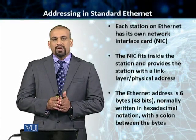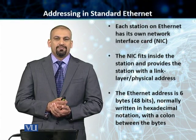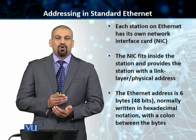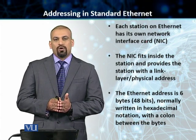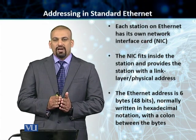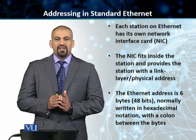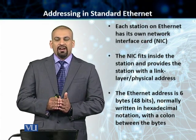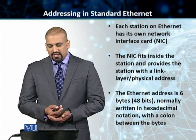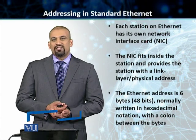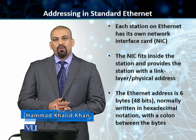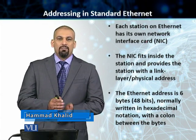We'll start talking about addressing in standard Ethernet. Every single device in the Ethernet has got its own network interface card, or NIC card. Every NIC card has got a fixed or unique link layer address, or physical address. In the case of standard Ethernet, this address is 6 bytes or 48 bits long, and we normally represent that using hexadecimal notation with a colon separating the bytes.